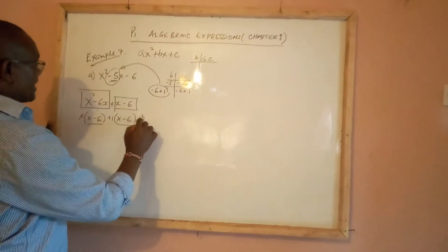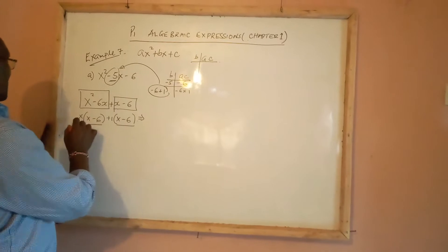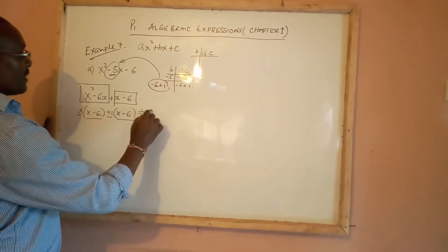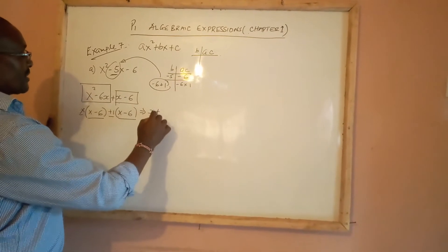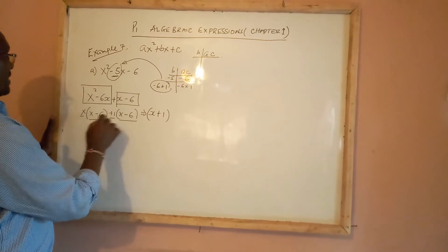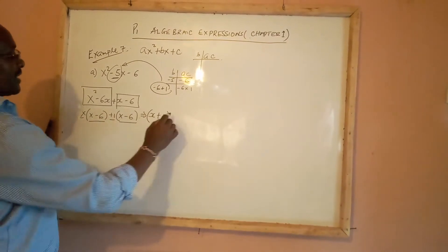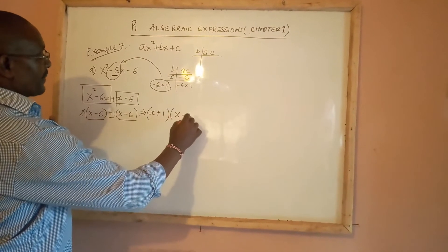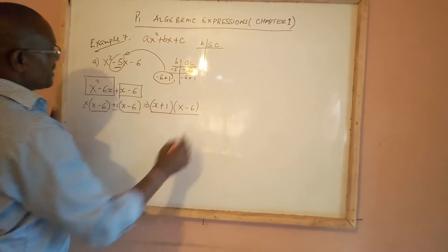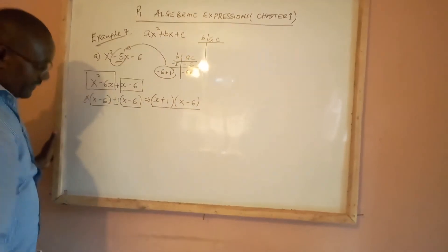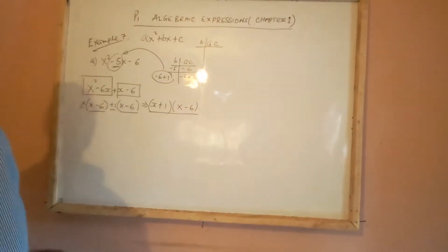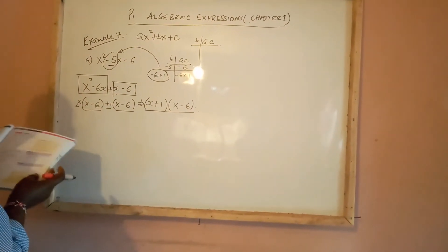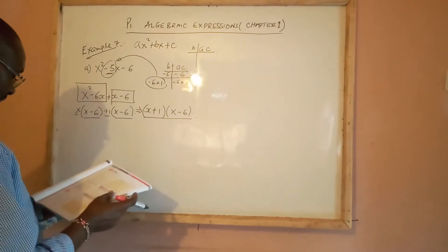The outer terms form their own bracket and the repeated bracket is written only once. Our final answer is (x plus 1)(x minus 6), and that expression has been completely factorized.